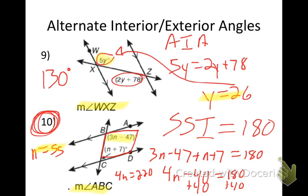But is that my answer? No, because I need to plug it in for angle ABC. Take N = 55, plug it in: 3 times 55 = 165, and 165 − 47 gives me 118 degrees.